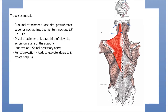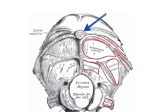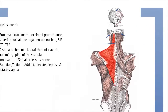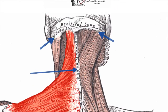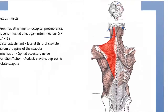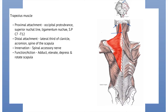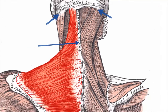The next muscle is the trapezius muscle. There are several proximal attachments for this muscle. Let's start with the occipital protuberance, which you can see in this diagram — it's basically just a bony line mark on the external surface of the occipital bone. The next one is the superior nuchal line, which you can see by the two arrows here — basically a curved line on the external surface of the occipital bone. The next one is the ligamentum nuchae, demonstrated here by the long arrow.